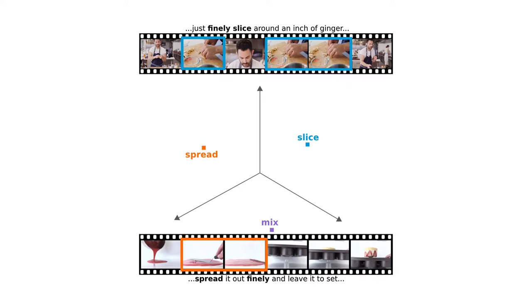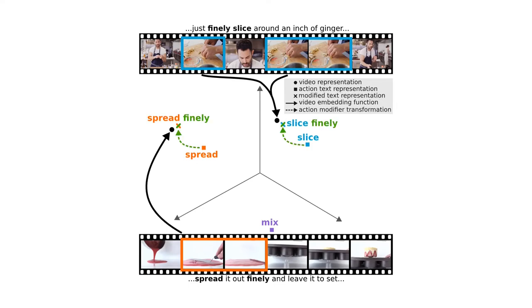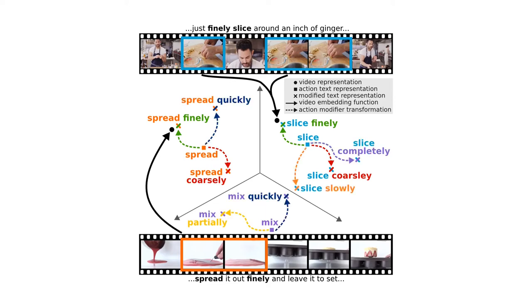We use the action as a query in scaled dot-product attention to learn from relevant parts of the video. Within the space, adverbs are learned as action modifiers—transformations which modify the action's embedding. These are shared between actions.